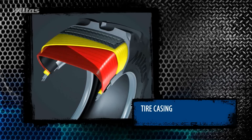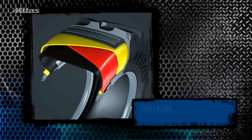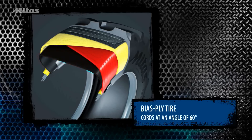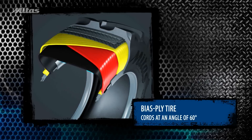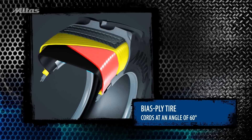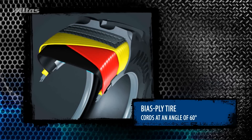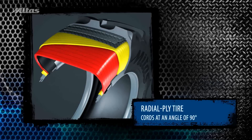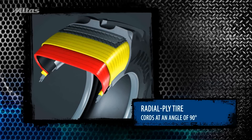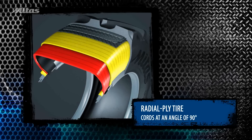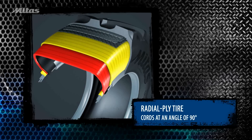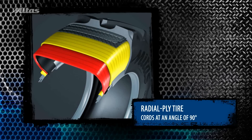This animation highlights the tire casing. In a bias ply tire, the cord is laid at an angle of 60 degrees relative to the tire's movement. Successive plies are laid at opposing angles, forming a criss-cross pattern. In the radial ply tire, the cord in the casing ply is laid at a right angle to the center of the tread.